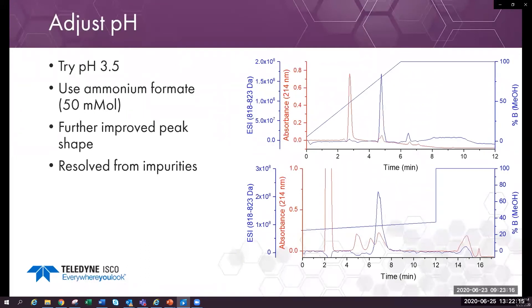To lower the pH, I use ammonium formate which buffers at pH 3.5. The peptide elutes as a single peak now and is mostly resolved from impurities. This purification would give both good purity and recovery.